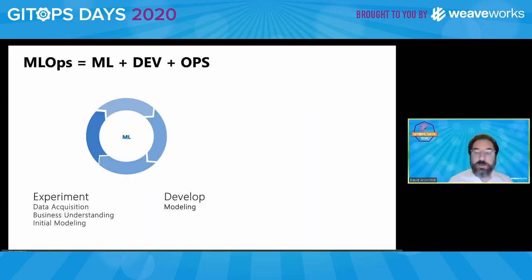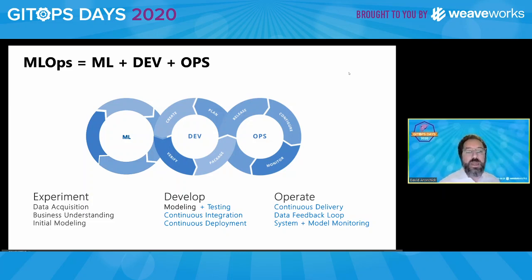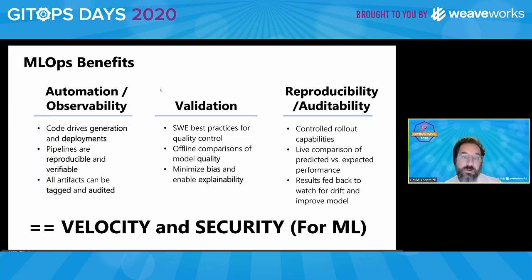The idea is basically the same. You have the data scientist doing her great work, but then she is brought into those overall circles in the same way that a domain-specific developer was — whether your app developer, mobile developer, or IoT developer. They'd be operating in their domain-specific area, but then brought into the center for overall development and rolling out. With MLOps, you get observability, auditability, and validation of all the things that you're rolling out, ultimately giving you velocity and security for ML.